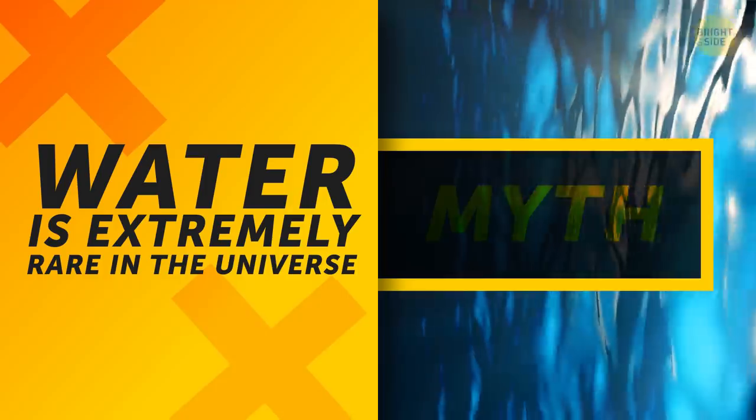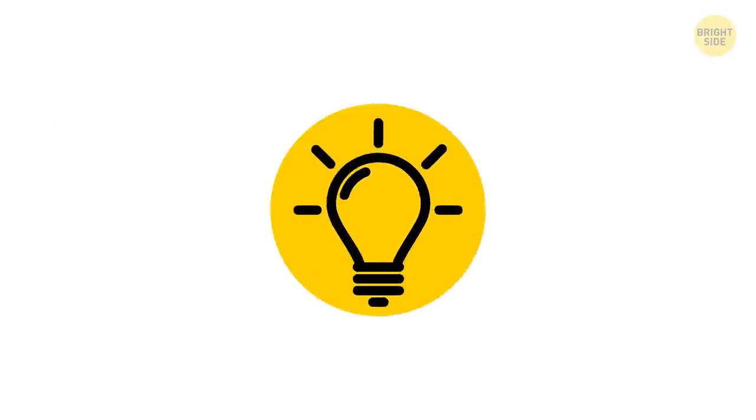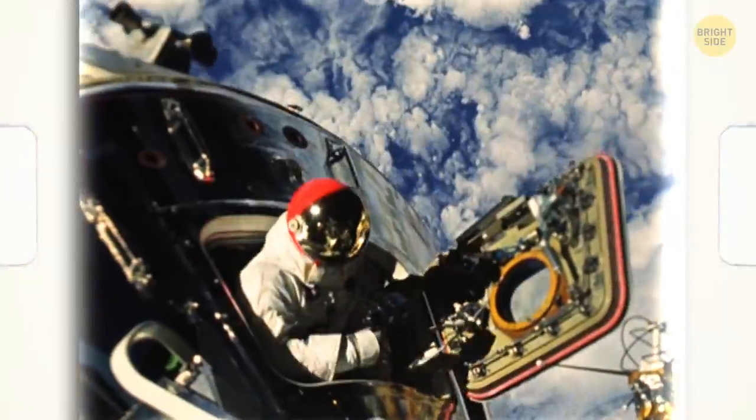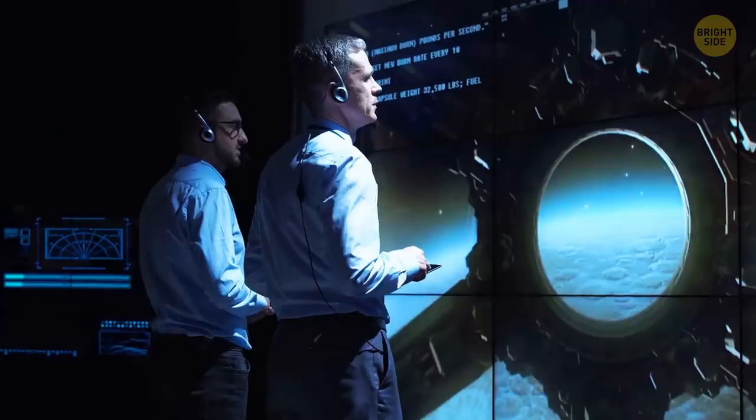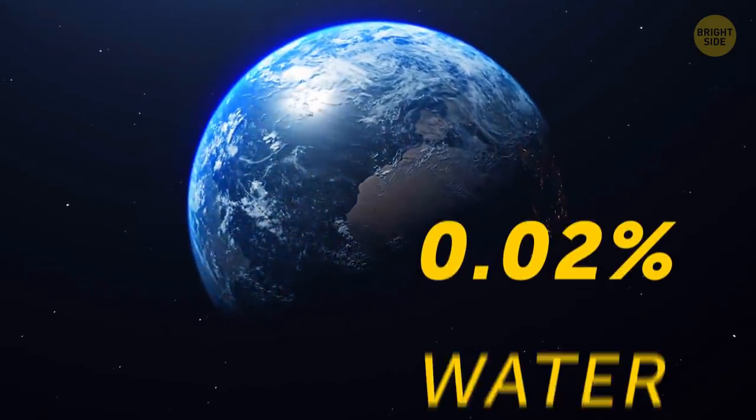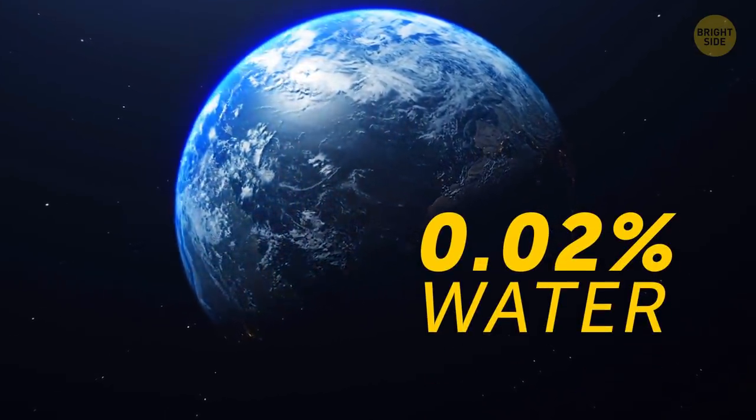Water is extremely rare in the universe. Both of the elements water consists of are among the most abundant stuff in the universe. We think water is scarce only because we rarely found it on our neighboring planets. But science proposes there are lots of huge worlds having up to half of their mass as water. To compare, our planet's mass is only 0.02% water.